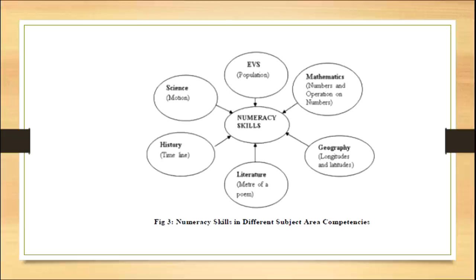A diagrammatic representation of interdisciplinary integration is presented in the figure on the screen. Numeracy skills are connected to EVS through the concept of population, to mathematics when teaching numbers and operations, to geography through longitude and latitude, to literature through the meter of a poem in English, to history using the timeline, and to science through the concept of motion. In EBS, population can also be taught using numeracy skills.